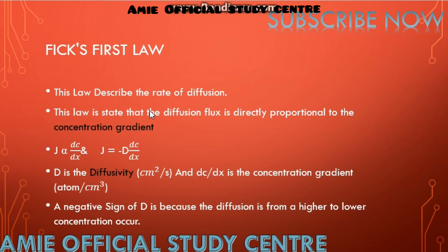Fick's First Law describes the rate of diffusion. This law states that diffusion flux is directly proportional to the concentration gradient. Introducing the proportionality coefficient factor minus D, where D is diffusivity, we get: J = -D (dC/dx), where dC/dx is the concentration gradient.